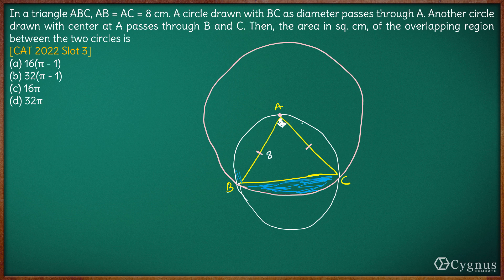Now, AB is 8 and AC is 8. Since this is an isosceles right triangle, BC will be 8√2 — the hypotenuse of an isosceles right triangle is √2 times the two equal sides. For the smaller circle, BC is the diameter, so the radius is half of BC, which is 8√2 divided by 2, giving 4√2.